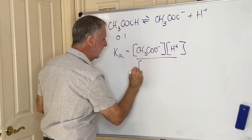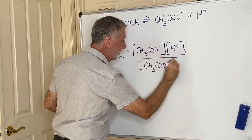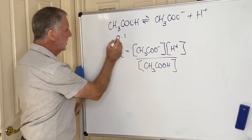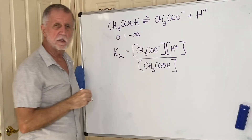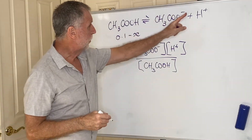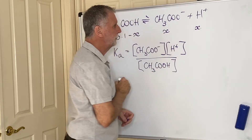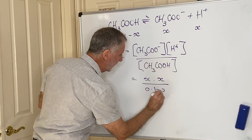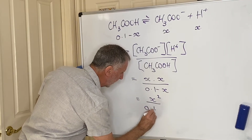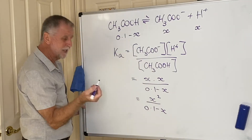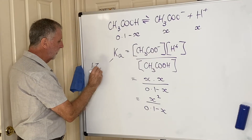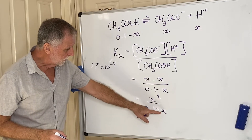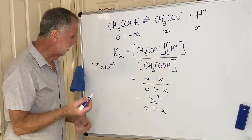I write my Kc expression in the usual way and substitute in concentrations. Since I don't have actual concentrations, I let X be the extent of dissociation — one molecule gives one CH₃COO⁻ and one H⁺, so I get X for each. The expression becomes X times X over 0.1 minus X, which is X squared over 0.1 minus X. The Ka value must be given to you; for ethanoic acid it's 1.7 × 10⁻⁵, so 1.7 × 10⁻⁵ = X² / (0.1 − X).